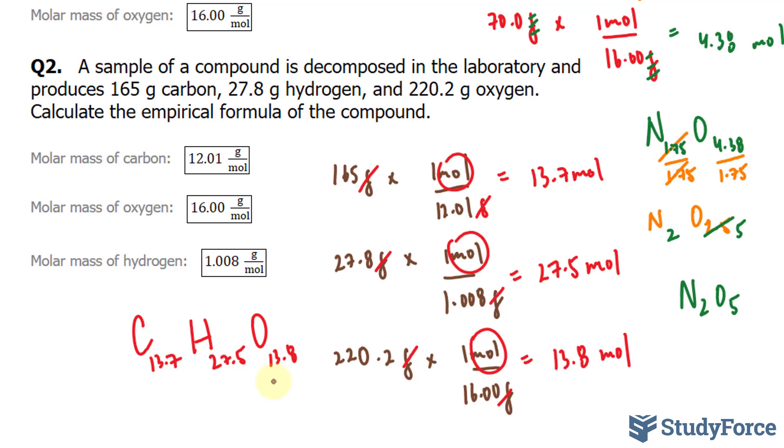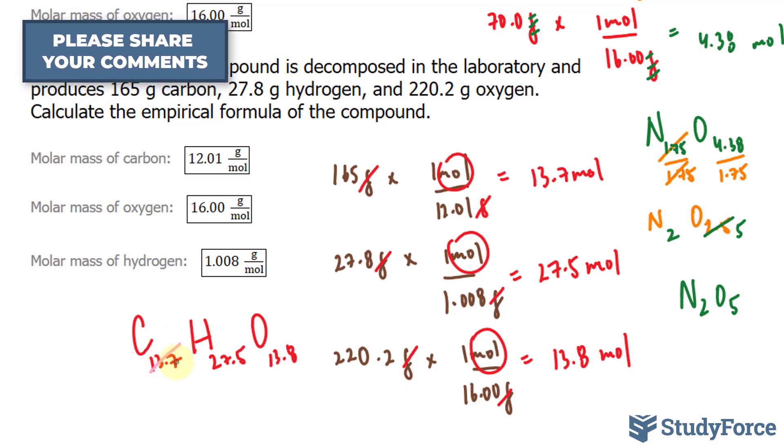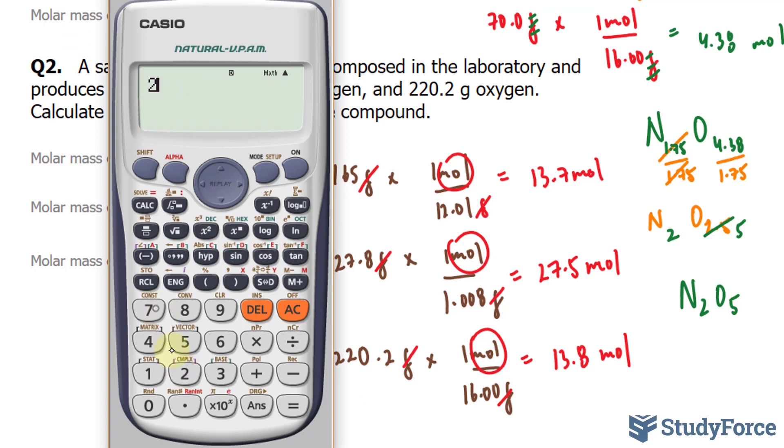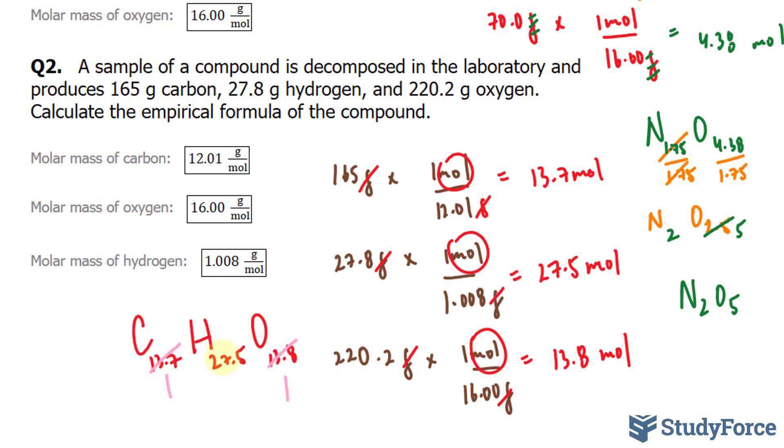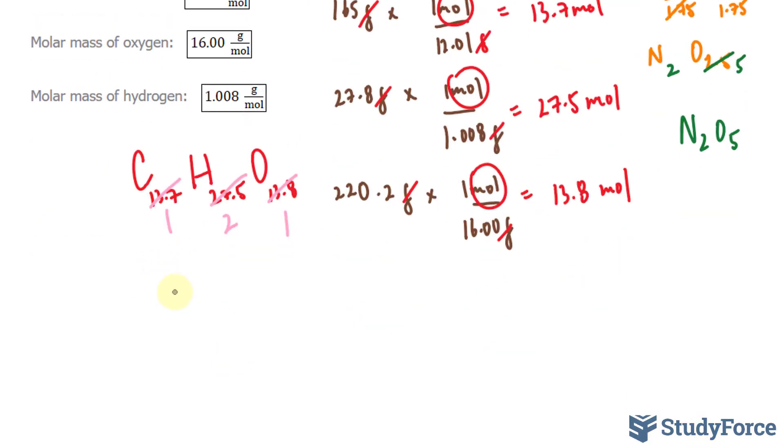The smallest of these numbers is 13.7, but it is very close to the amount of oxygen. So if I divide them by 13.7, this becomes a 1, this becomes a 1, and let's see what happens when we divide 27.5 by 13.7. As suspected, I would get a number close to 2. So our chemical compound here has a chemical formula of CH2O.